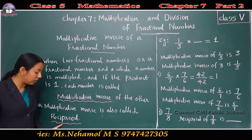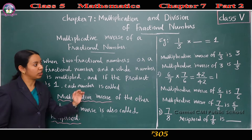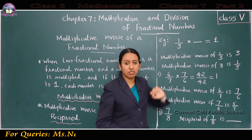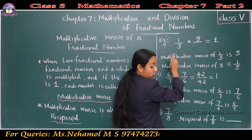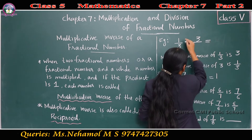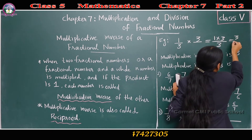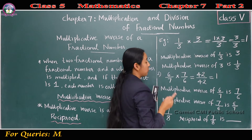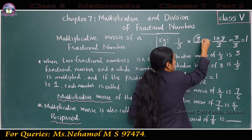Multiplicative inverse is also called reciprocal. Consider the number 1/3. 1/3 into which number gives 1? 1/3 into 3 gives 1. If we multiply 1/3 with 3, we get 1 into 3 by 3, which is 3/3, which equals 1. So the multiplicative inverse or reciprocal of 1/3 is 3.